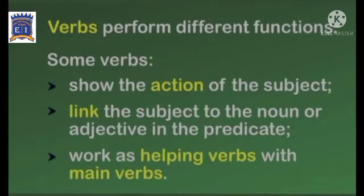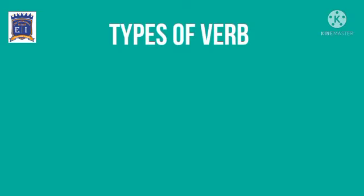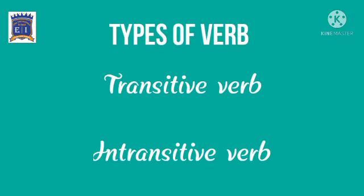Verb perform different functions. Some verb show the action of the subject. Some verb link the subject to the noun or adjective in the predicate. Some verb work as helping verb with the main verbs. Now, types of verbs. There are two types of verbs: transitive verb and intransitive verb.